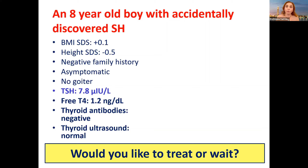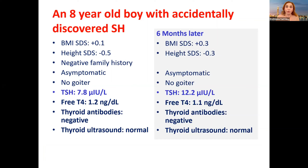I would wait because there are no risk factors — everything is negative. No symptoms, weight and height are normal, negative family history, antibodies, and ultrasound all fine. So let's wait. The boy came to me six months later — all the data are the same except TSH jumped to 12.2 and he is still asymptomatic. Would you treat or wait now?